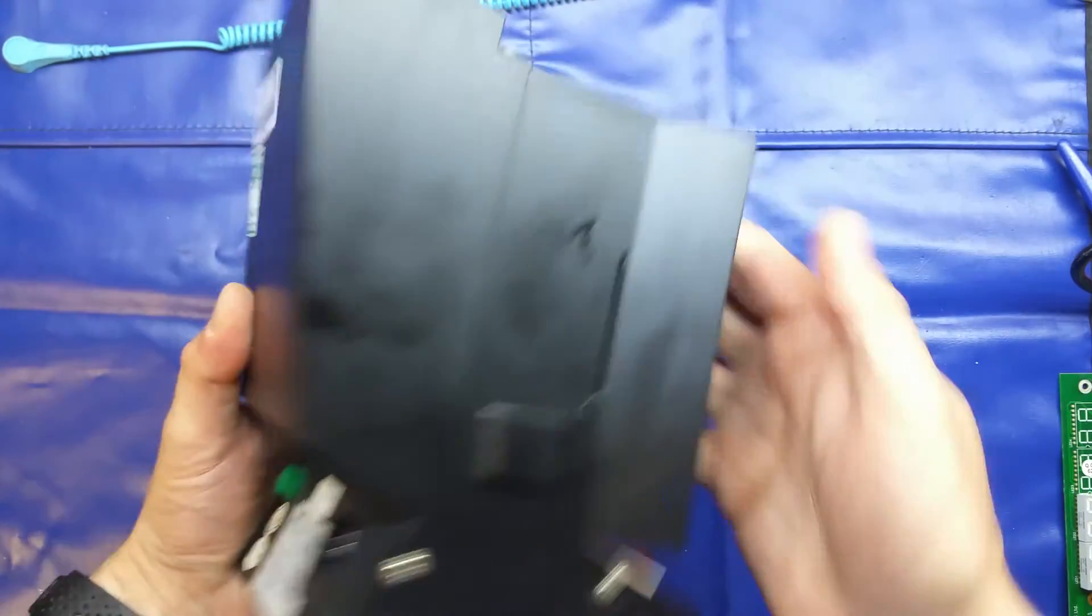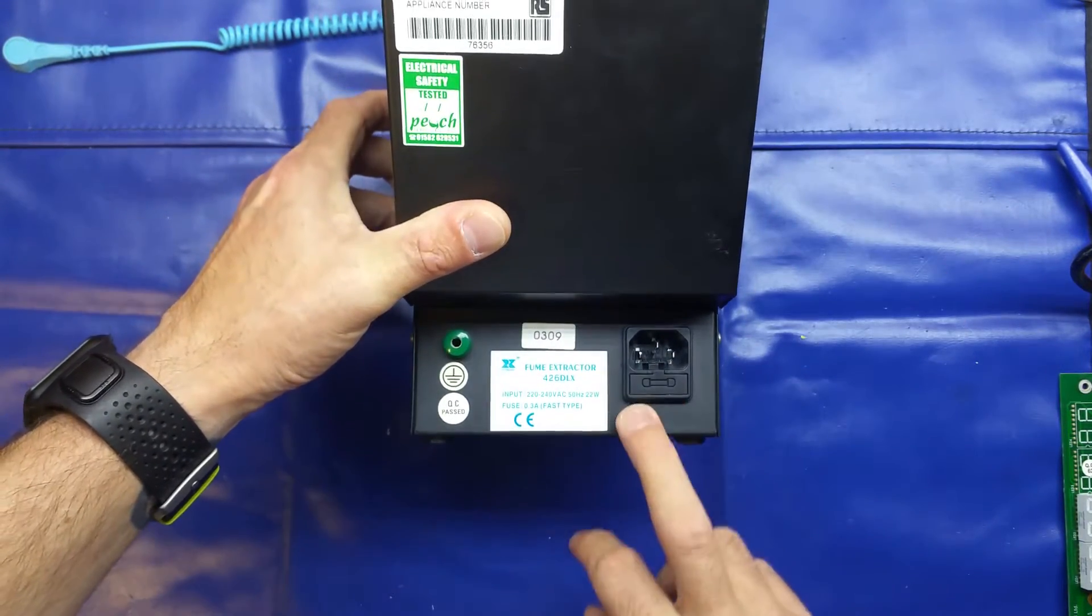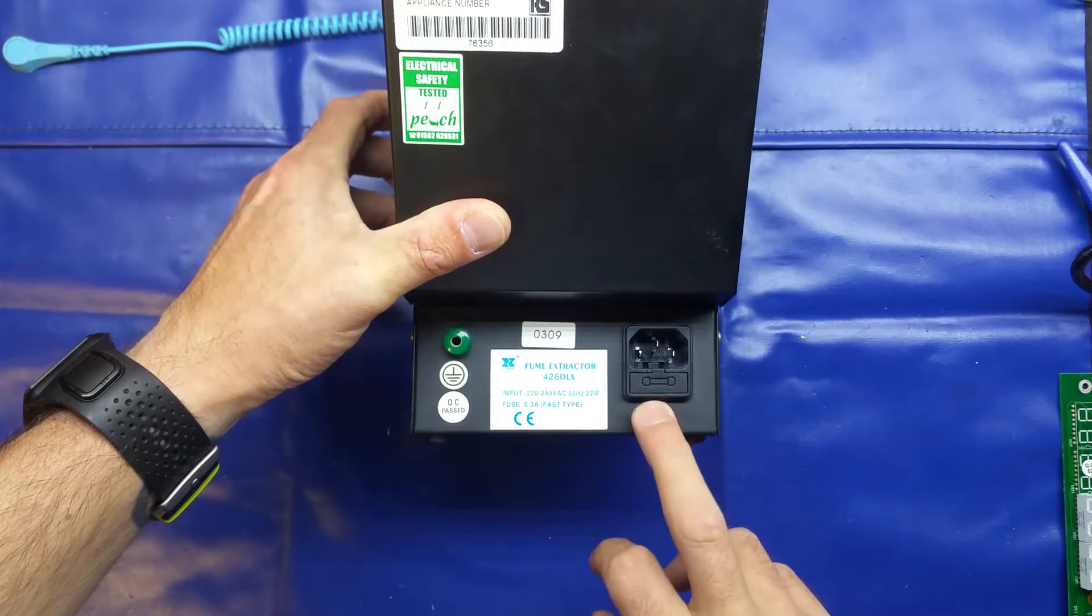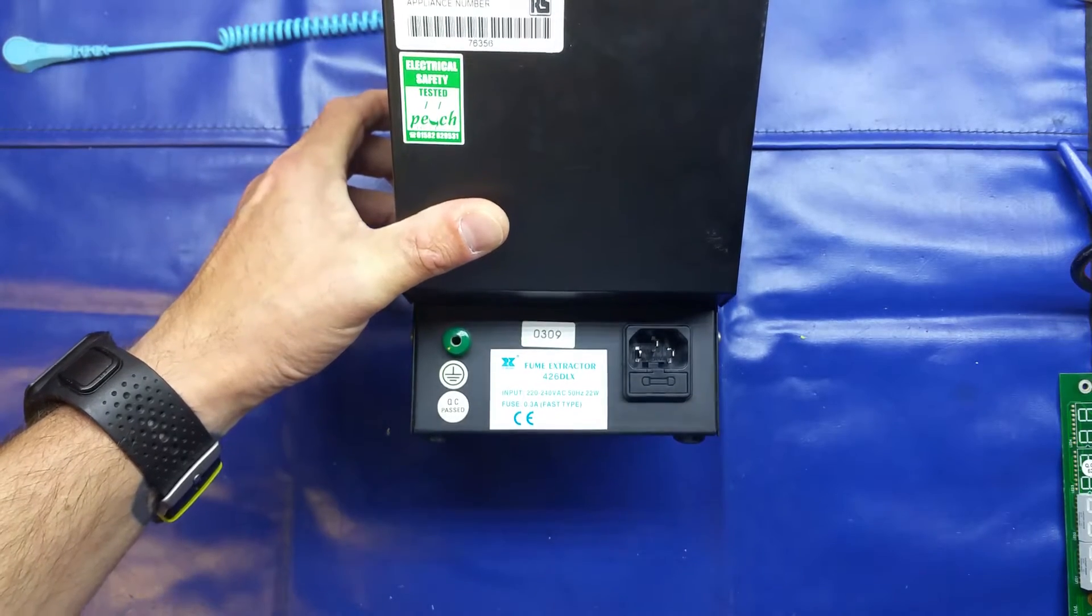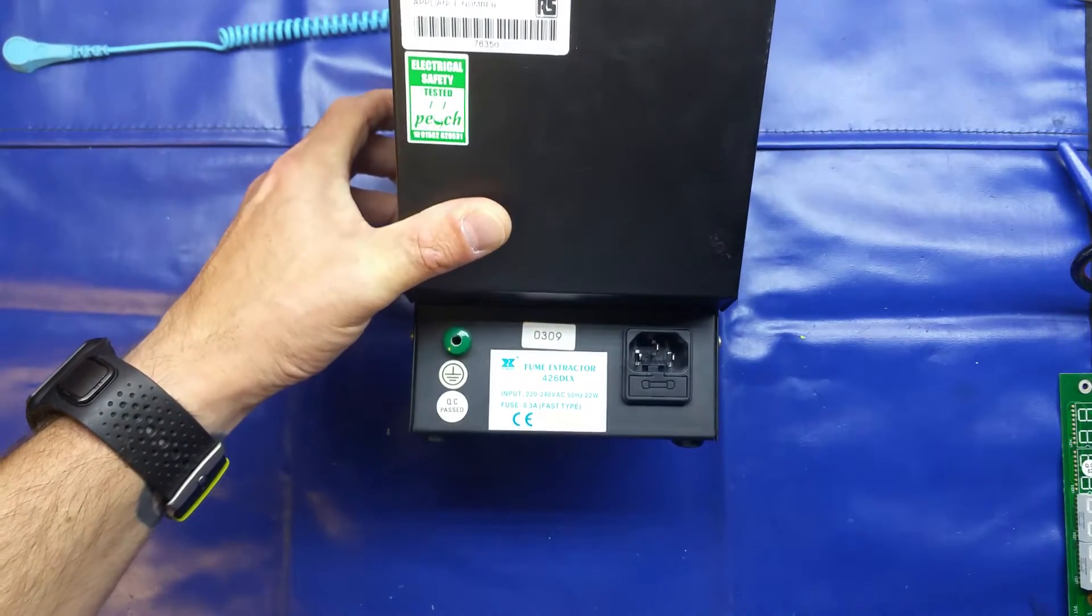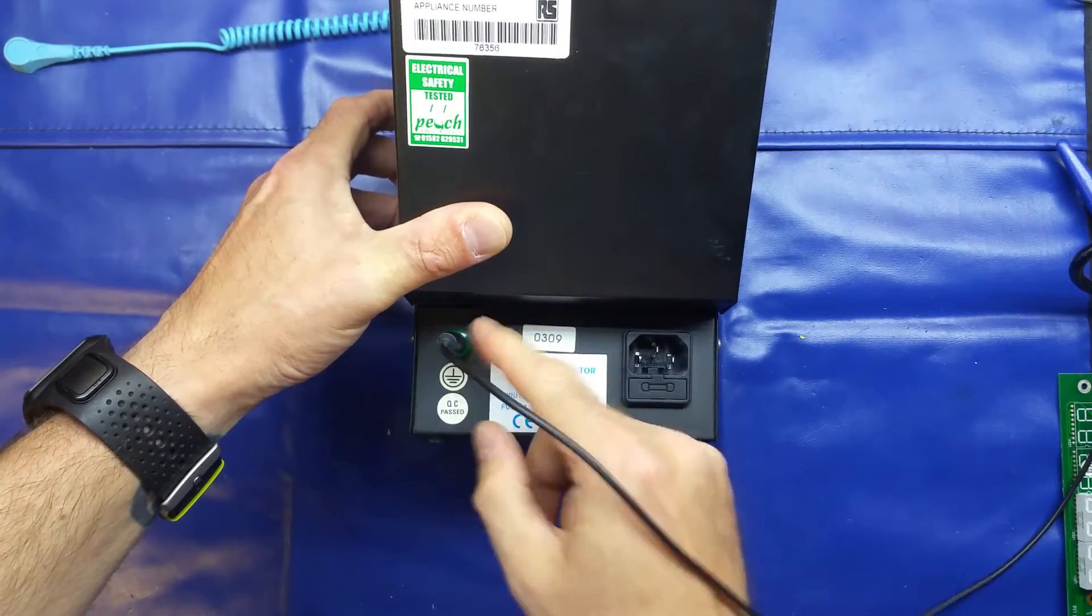On to the back, we've got an IEC connector with a 0.3 amp fast blow fuse, and a grounding point, which accepts a standard 4mm banana plug.